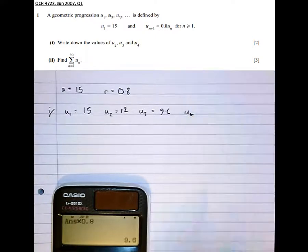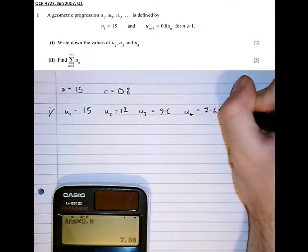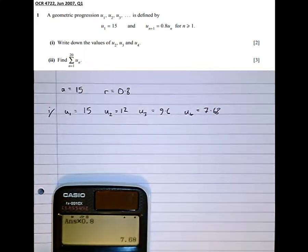And the fourth term, times it by 0.8 again, which gives us 7.68. So there's part one done.